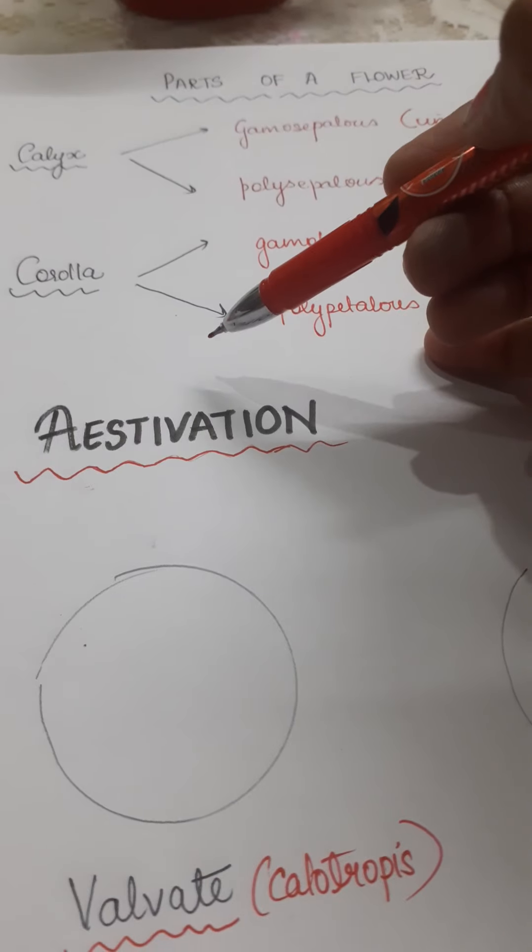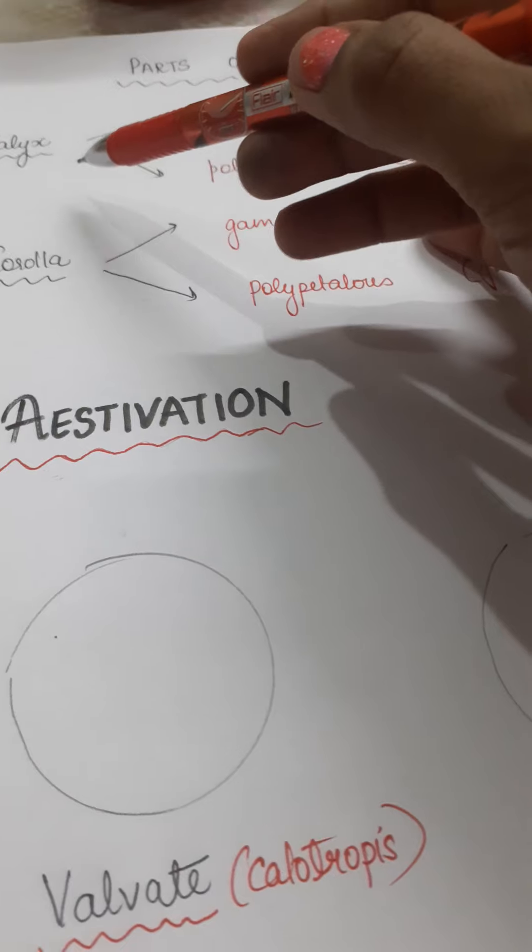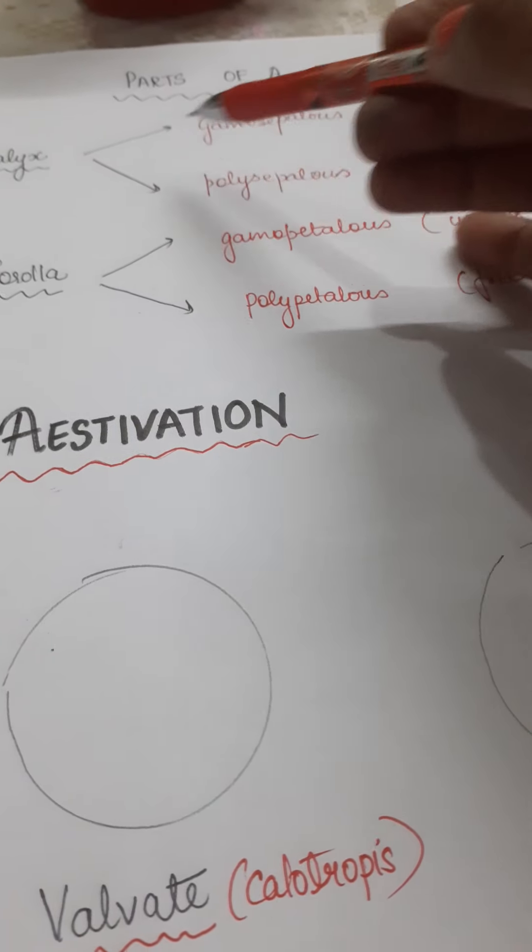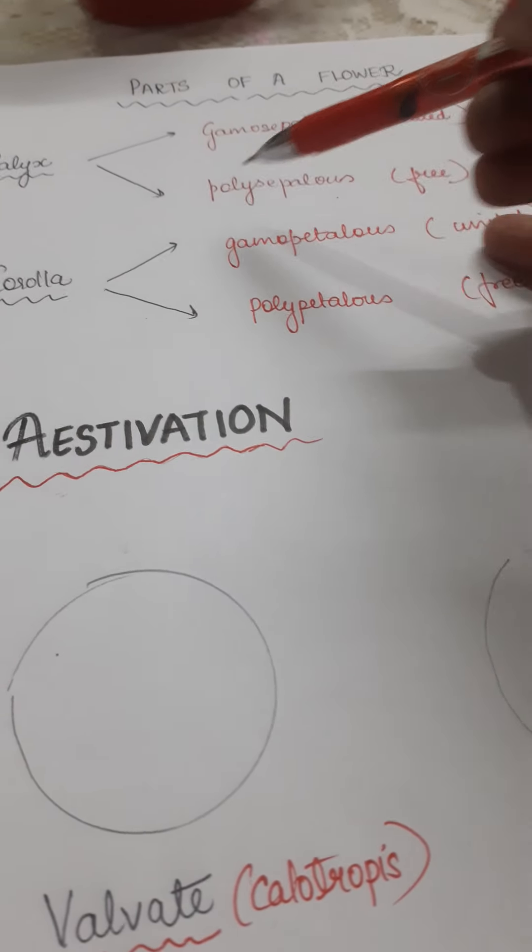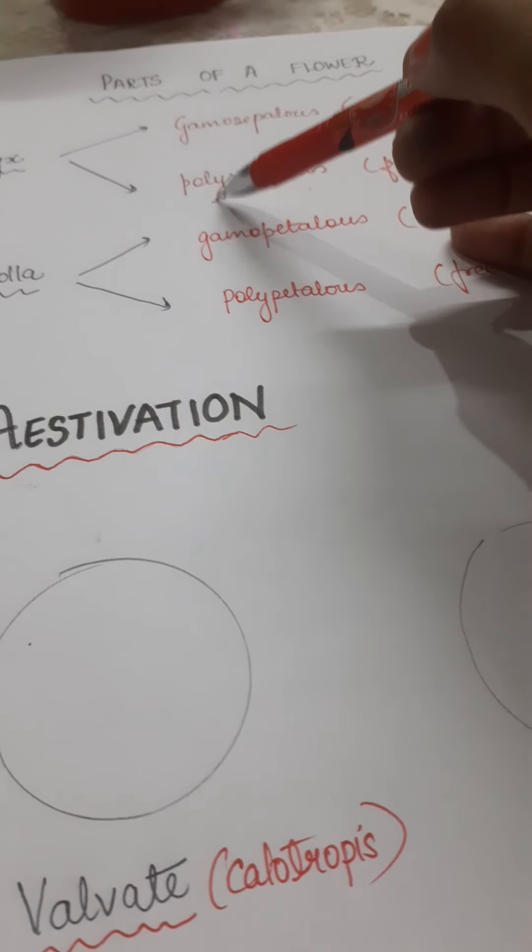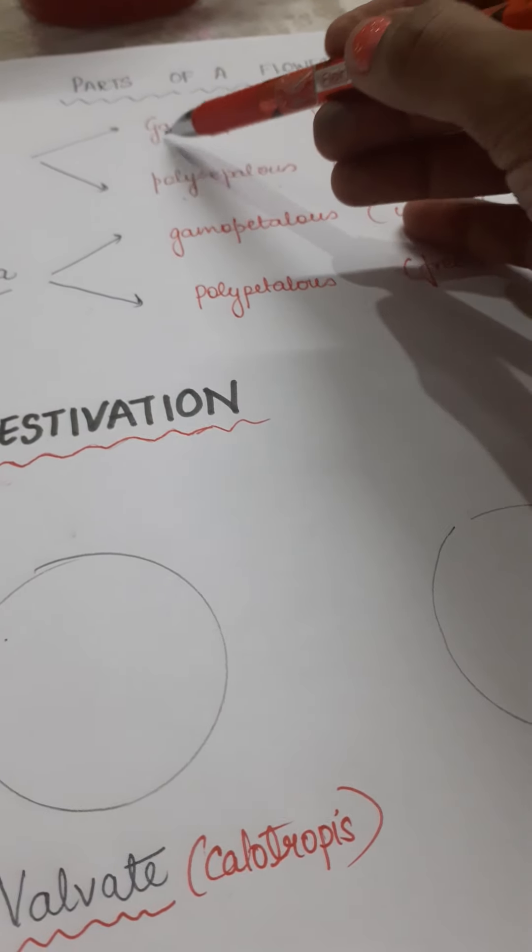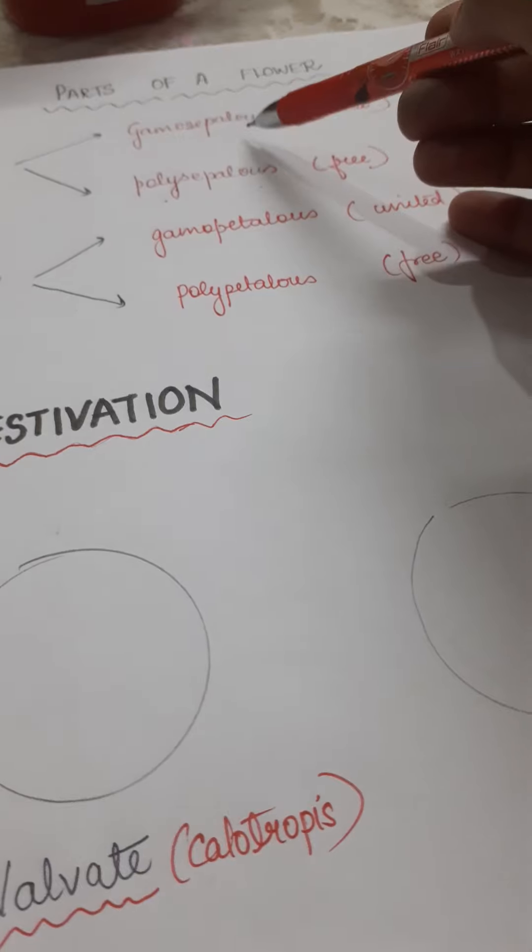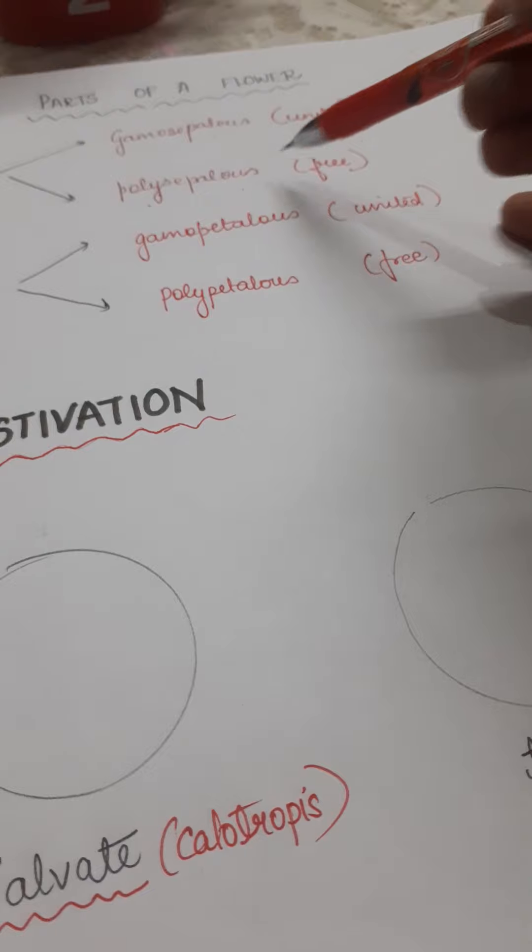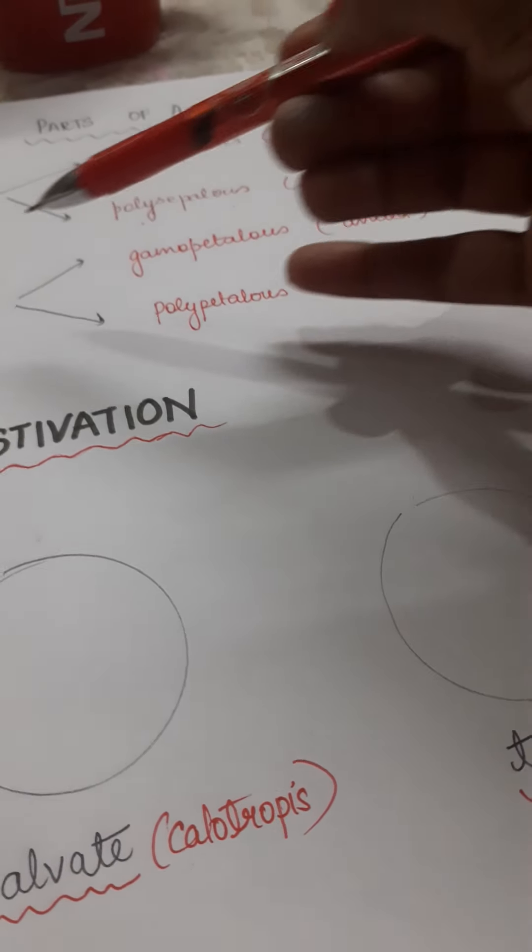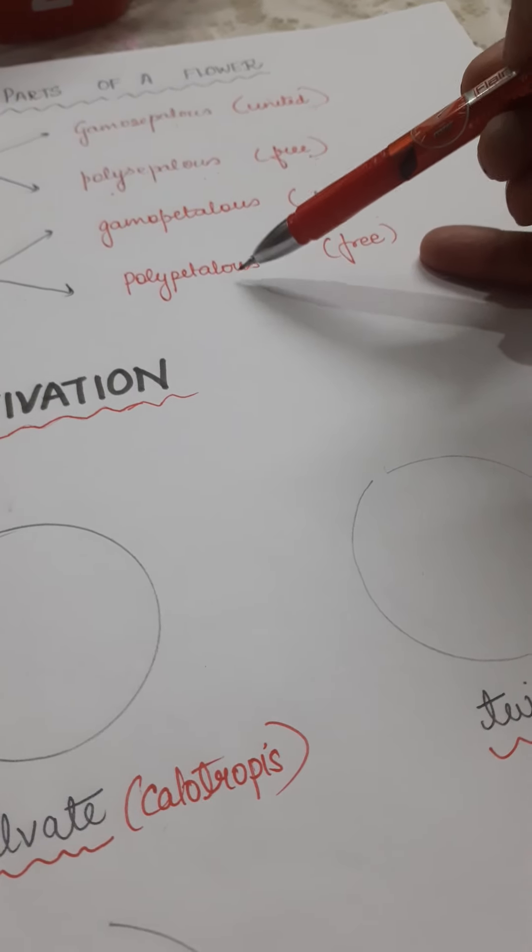You have calyx and corolla. The arrangement of sepals can be gamosepalous or polysepalous. Gamosepalous means jointed, poly means separated. Gamo and poly are used as prefixes. Gamosepalous is a condition where all the sepals are united and polysepalous is a condition where all the sepals are free. Same is followed for corolla also. So you have gamopetalous and polypetalous.